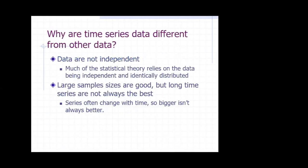How is time series data different from other data? In general statistical analysis, there is an assumption that observations are independent — IID, meaning independent and identically distributed. But in time series analysis, this assumption is not fulfilled, because data from one year is associated with data from the previous year. So in time series, data is not independent. This is one key difference.